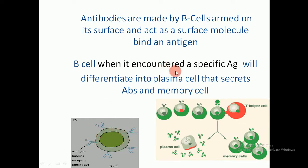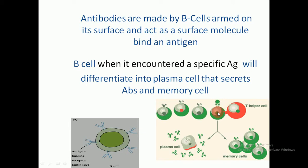When a B cell encounters a specific antigen, it will differentiate into a plasma cell that secretes a large number of antibodies, or into a memory cell. So when this B cell encounters an antigen, it differentiates into the plasma cell that secretes large numbers of antibodies, and also differentiates into memory B cells.